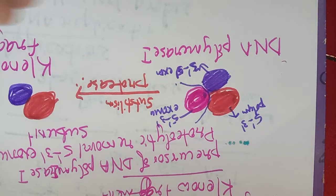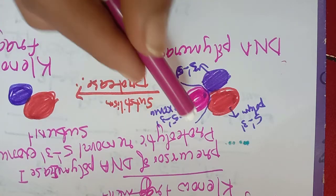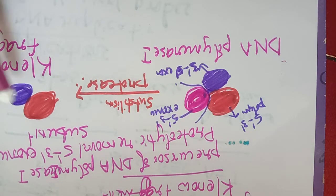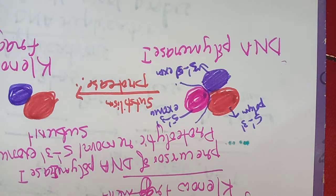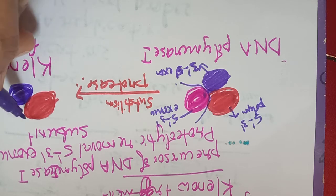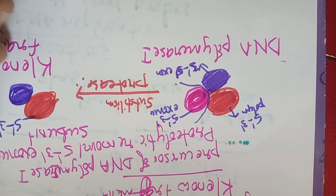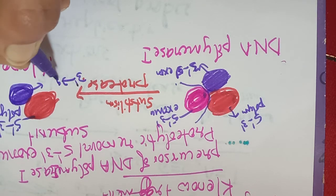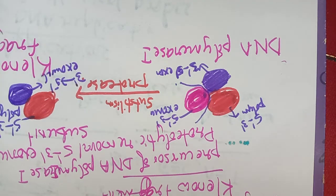The Klenow fragment is a large fragment. The small fragment — the 5' to 3' exonuclease subunit — is removed by proteolytic cleavage. So the Klenow fragment is obtained by the removal of the 5' to 3' exonuclease subunit, and it retains the 5' to 3' polymerase subunit and the 3' to 5' exonuclease subunit.